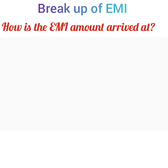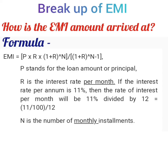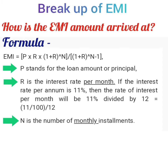So how is the EMI amount arrived at? There is a slightly complex mathematical formula involved in the calculation of EMI. You don't need to manually calculate it as there are many calculators available online where you just enter the principal, the rate of interest per annum, and the tenure to get the EMI automatically. In the formula, P stands for the loan amount or principal, R is the interest rate per month — if the rate per annum is 11%, then R equals 11% divided by 12 — and N is the number of monthly installments.